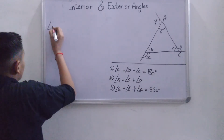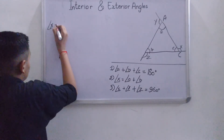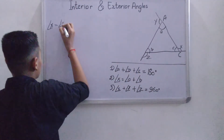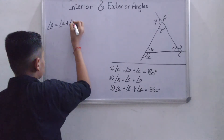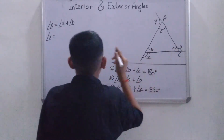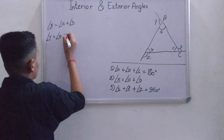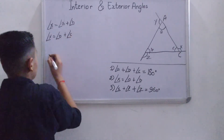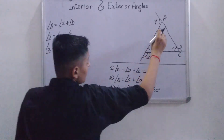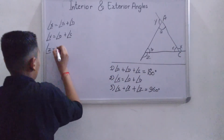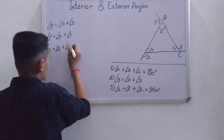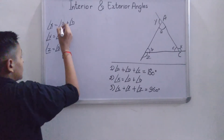Let's prove how 360 degrees comes about. Angle X equals Angle A plus Angle B. Angle Y equals Angle B plus Angle C. Angle Z equals Angle A plus Angle C.